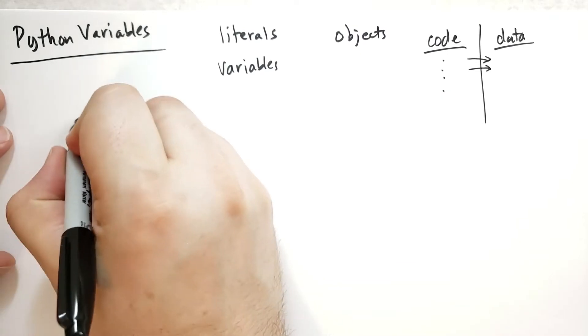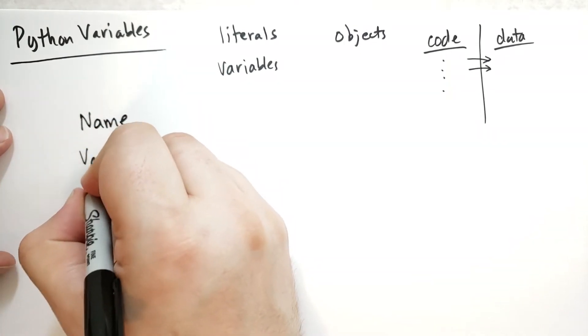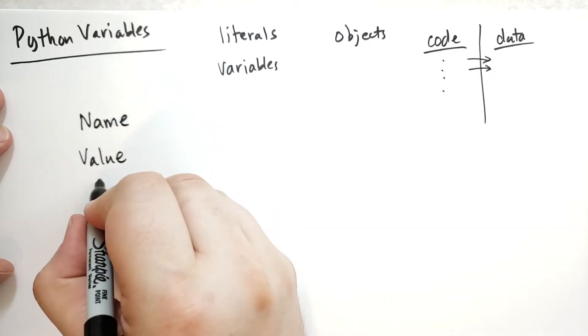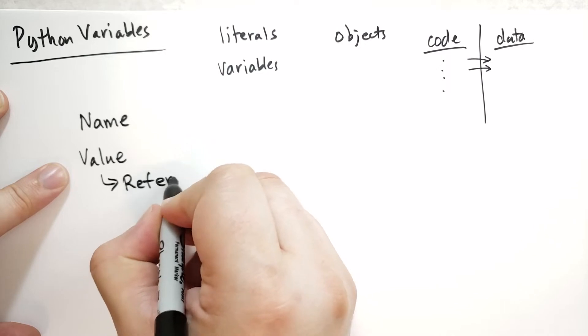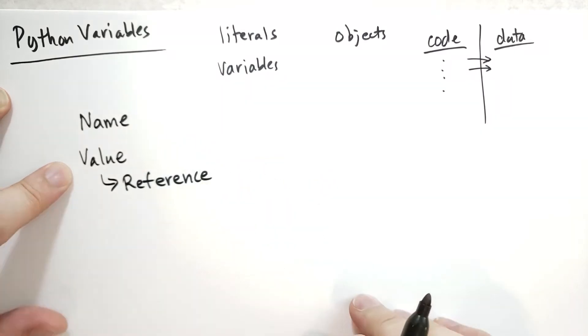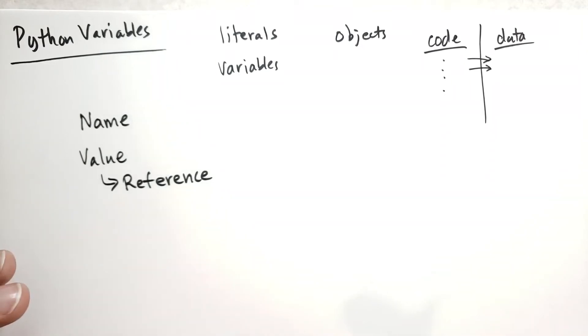The variables have a name. They have a value. The value is always some object. There's a reference to an object. It doesn't store the value directly. This is important to remember. Other languages, each variable has its own value. But in Python, the value is in fact a reference to another object. And so multiple variables can refer to the exact same value, the exact same object.